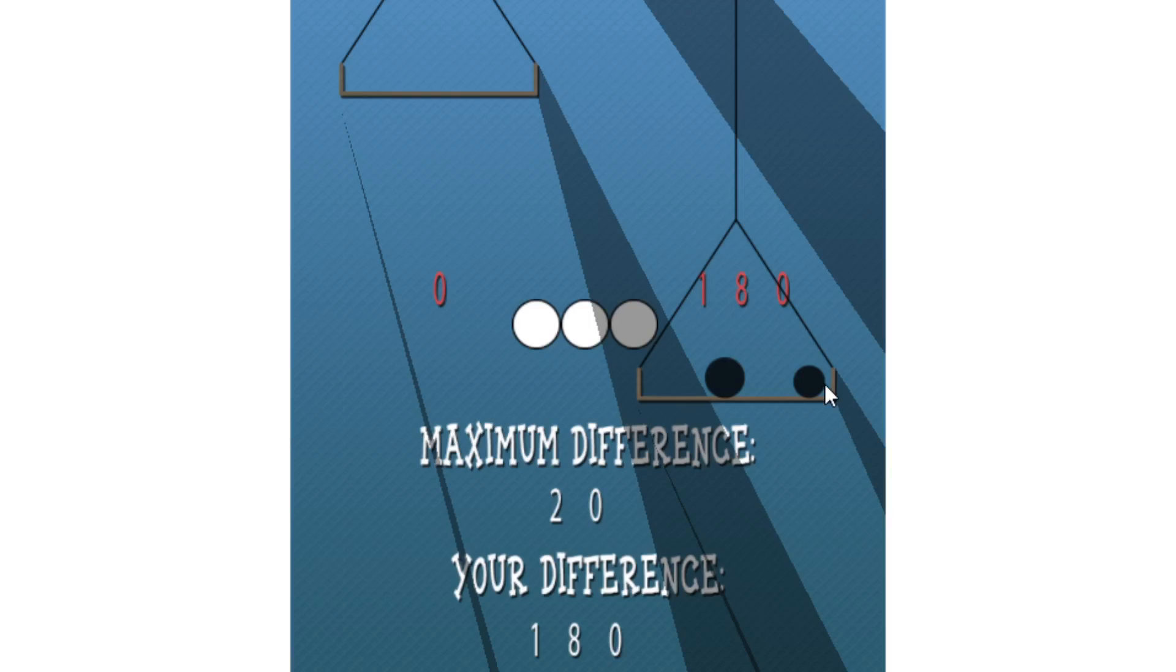These two balls here, their weight are equivalent to 180 and what you're trying to do is generate enough weight over here through estimation to get where the maximum difference between the two is 20 or less.